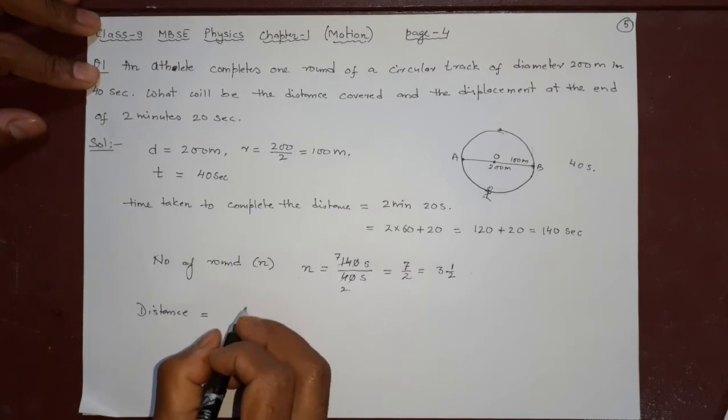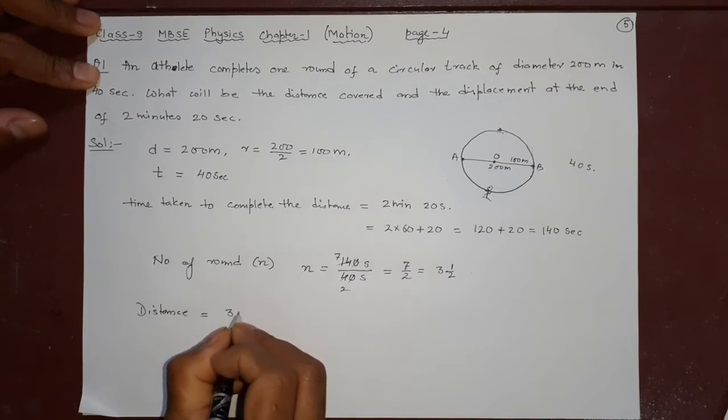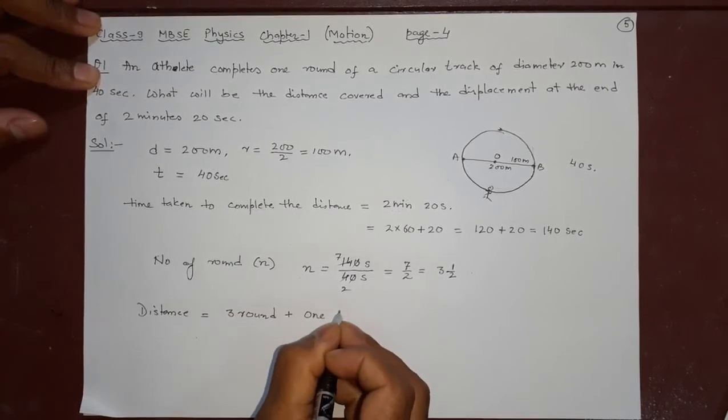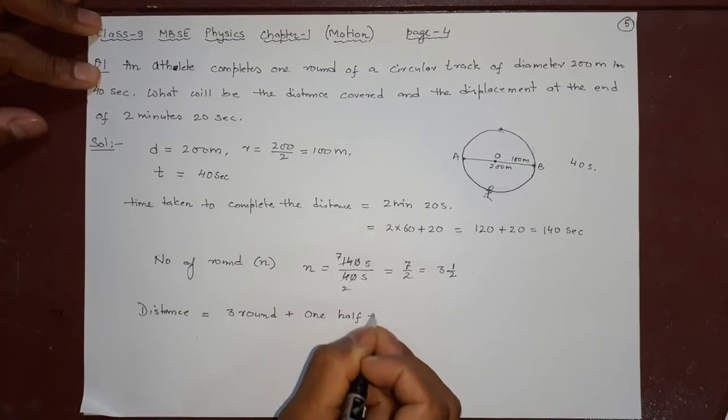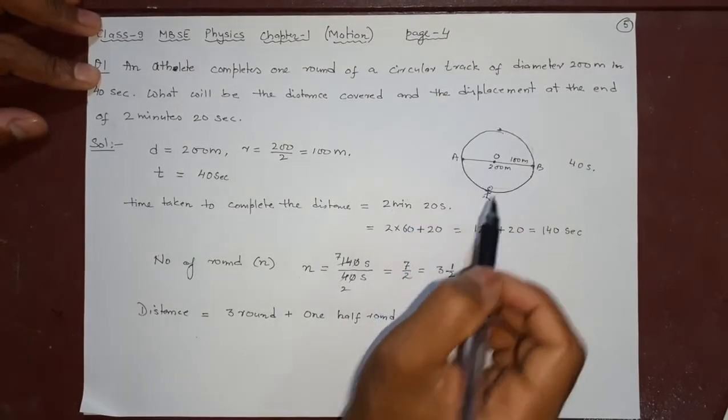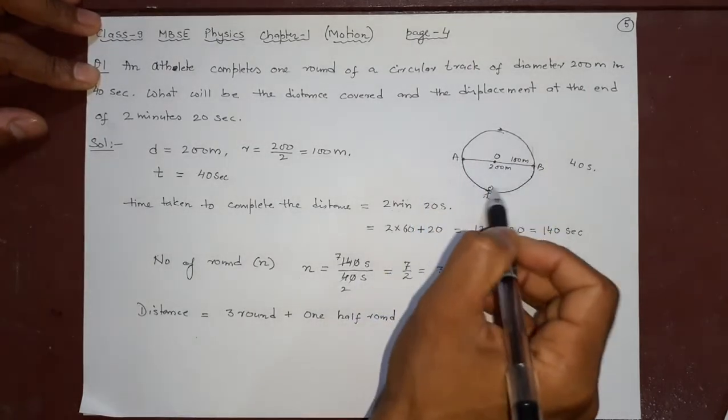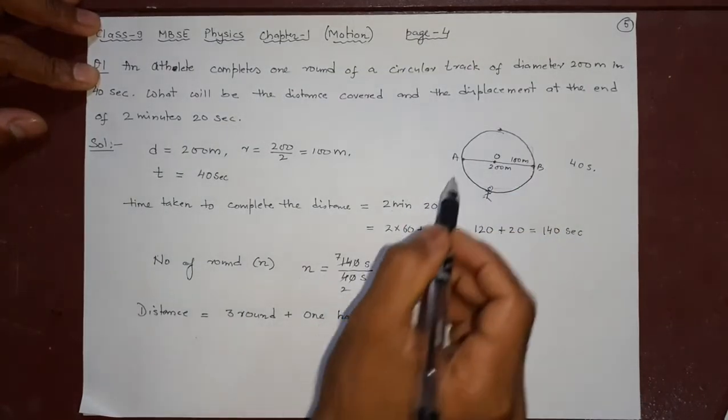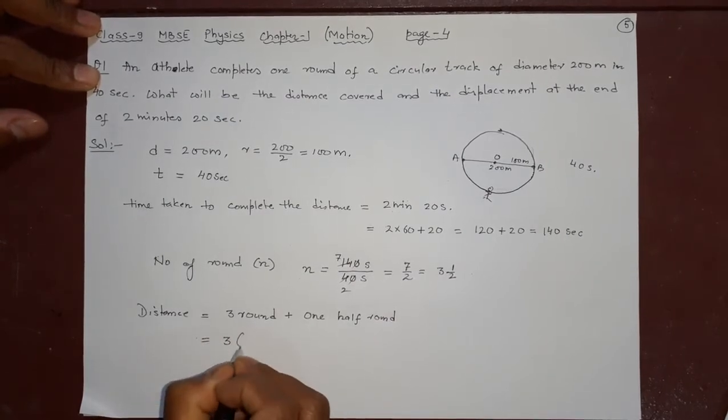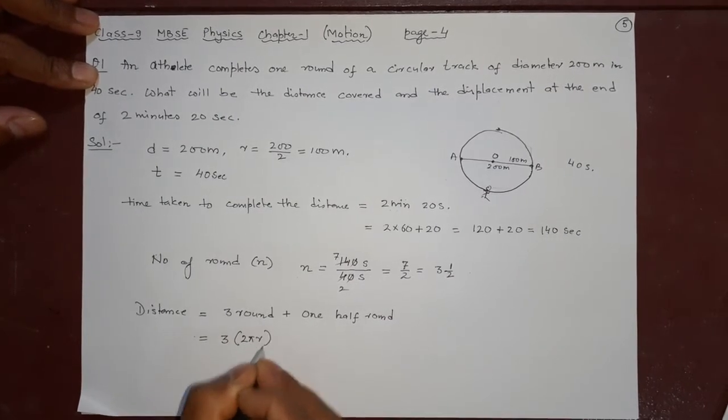Distance is 3 rounds plus 1 half round, the total distance. Because 1, 2, 3 rounds and also 1 half round. What is 3 rounds? 3 into 2 pi r. Let us understand, 2 pi r means when you cover in a circle one whole round, that means you are covering the perimeter or circumference.